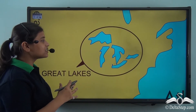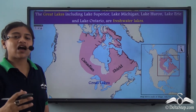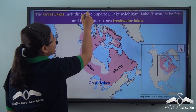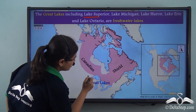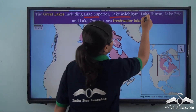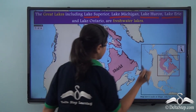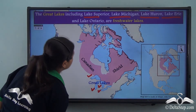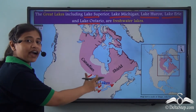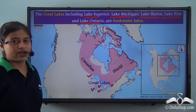The Great Lakes lie at the eastern part of the continent and are a group of five major lakes. These include Lake Superior, Lake Michigan, Lake Huron, Lake Erie, and Lake Ontario. These five major lakes together make up the Great Lakes of North America.